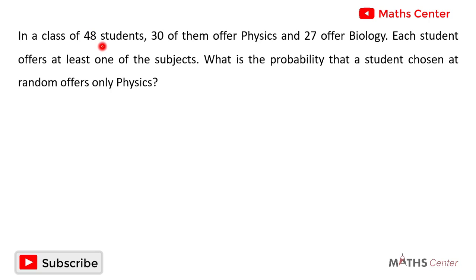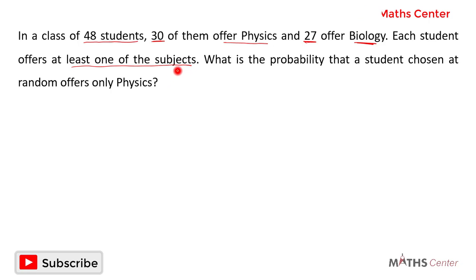In this class we have 48 students. Out of these 48 students, 30 of them offer physics and 27 offer biology. The question tells us that each student offers at least one of the two subjects. We are going to use this information to calculate the probability that a student chosen at random from the class offers physics only.